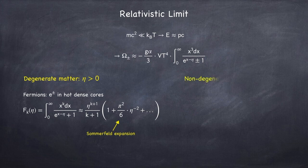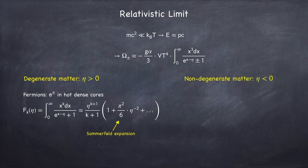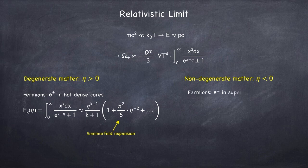For non-degenerate relativistic matter, we have eta is less than zero. One example of this type of matter would be electrons and positrons in supernovae. In this case,